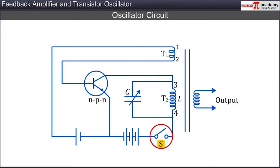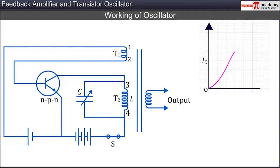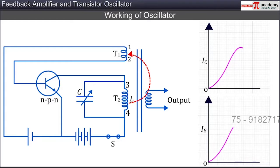When the switch is open, the transistor cannot conduct and is in the cut-off state. When the switch S is closed, the collector current rises from 0 to a peak value as shown in the graph. As the collector current rises in coil T2, it induces a current in coil T1. Due to this inductance or positive feedback from coil T2 to coil T1, the emitter current also rises to a peak value as shown in the graph.